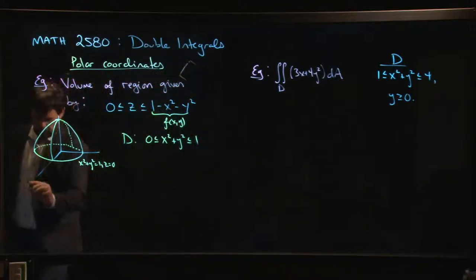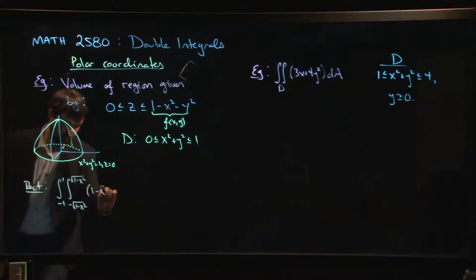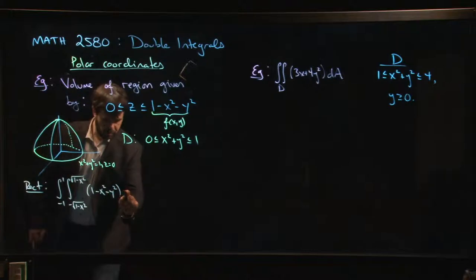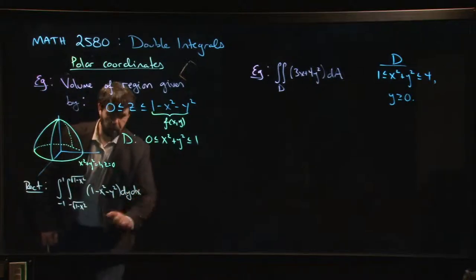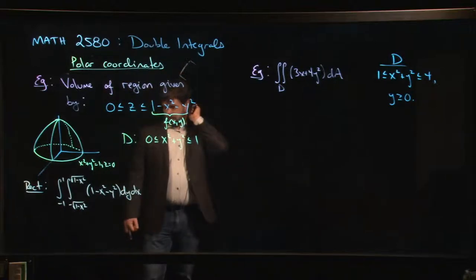We could set this up in rectangular coordinates. In rectangular coordinates, it would look something like this: minus 1 to 1, minus the square root of 1 minus x squared to plus square root of 1 minus x squared, 1 minus x squared minus y squared dy times dx. You could do that integral, but you probably don't want to.